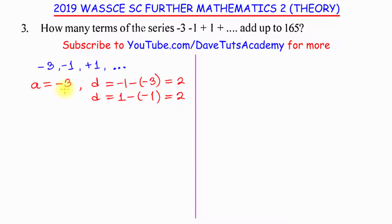So, the first term is minus 3, the common difference is 2. And then we are told that the sum up to a particular term, Sn, is 165. So, what we are asked to find is to find the number of terms that we add up to 165.